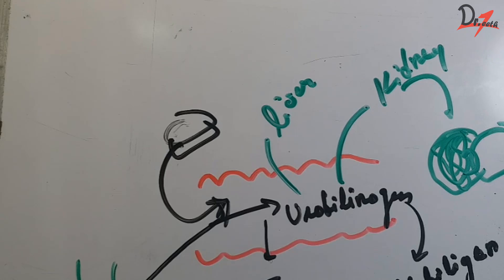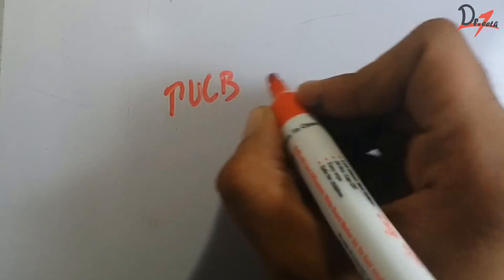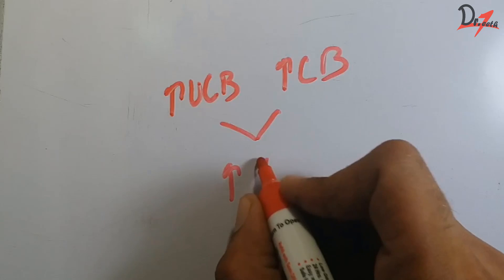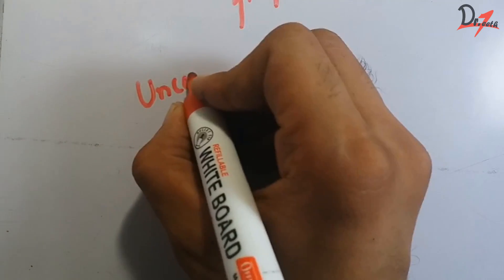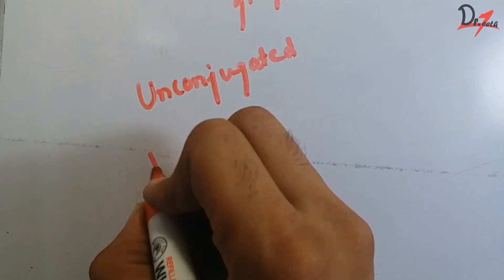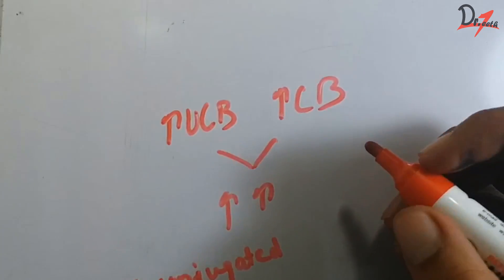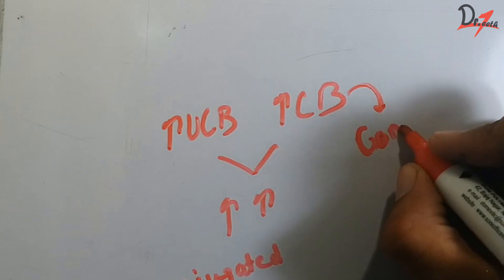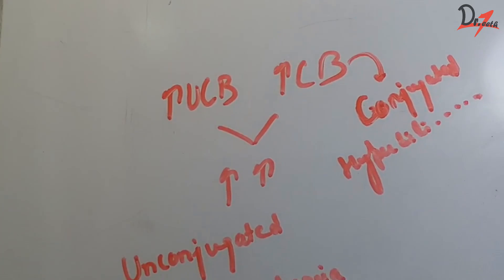This was the normal physiology of how bilirubin is produced in the body. Now, if any of the mechanisms get impaired or there is a disturbance at any place in bilirubin production, jaundice occurs — whether there is an increase in unconjugated bilirubin, known as unconjugated hyperbilirubinemia, or an increase in conjugated bilirubin, known as conjugated hyperbilirubinemia.